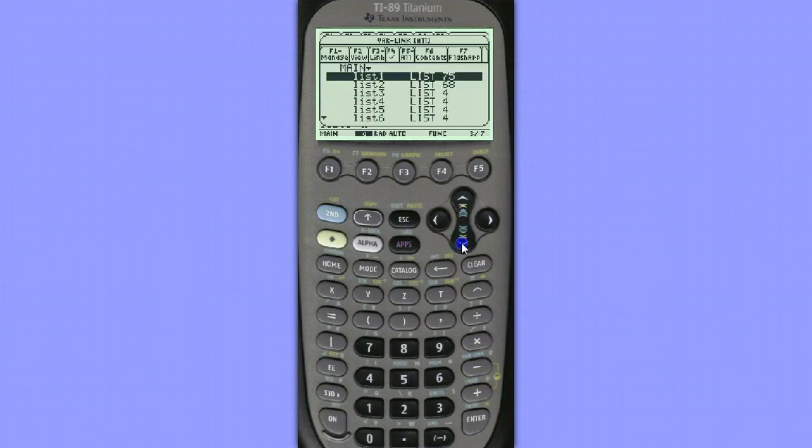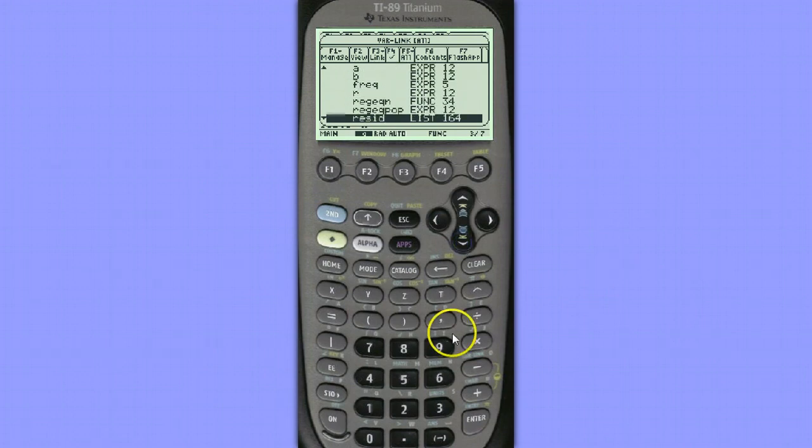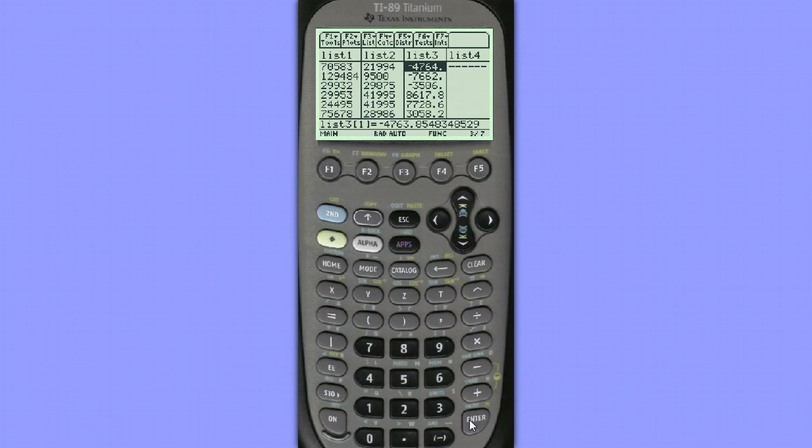So this is the variables that are in our calculator. And if I scroll down far enough I'll see a list called residuals right here. I hit enter and enter and it places the residuals in list 3.